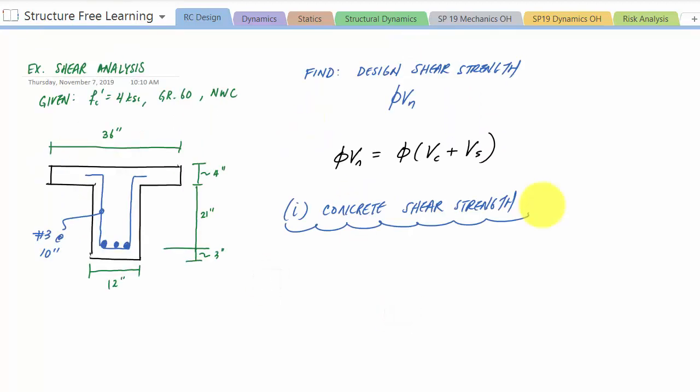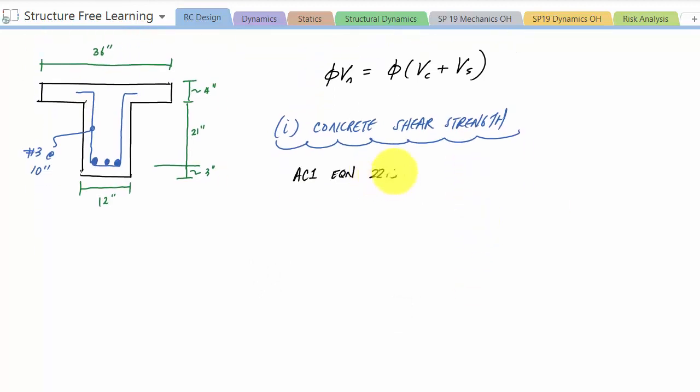This is primarily associated with flexure shear cracking. In any case, we have normal weight concrete, so this is 2, lambda is 1 for normal weight concrete, it's the square root of 4 ksi concrete. We want to make sure our units are going to be in 4000 here psi.